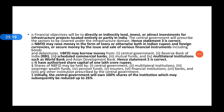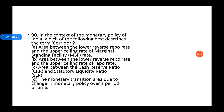NBFID will have an authorized share capital of one lakh crore rupees. The shares of NBFID may be held by the central government, multilateral institutions, sovereign wealth funds, pension funds, insurance and financial institutions, banks, and any other institution prescribed by the central government. Initially the central government will own 100% of the shares of the institution, which may subsequently be reduced up to 26%.